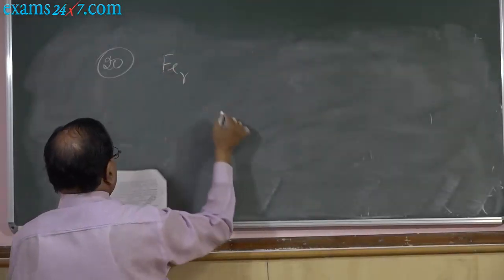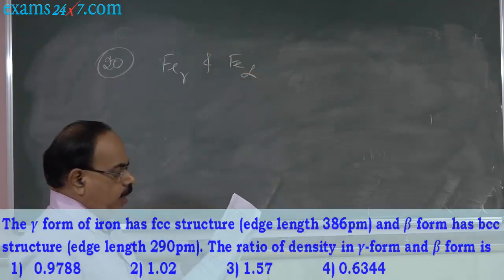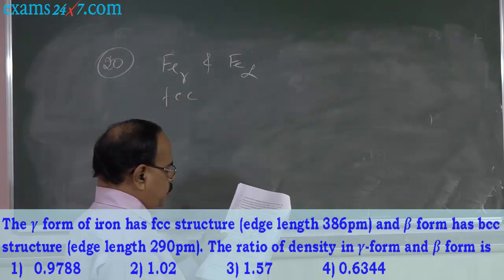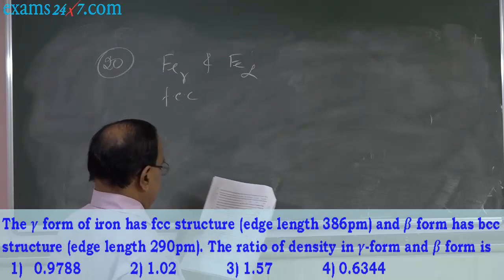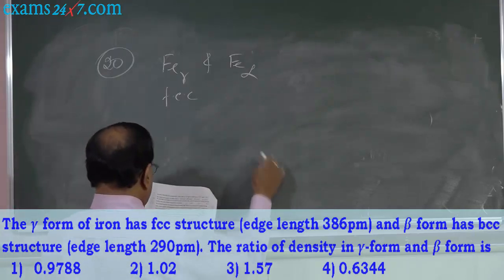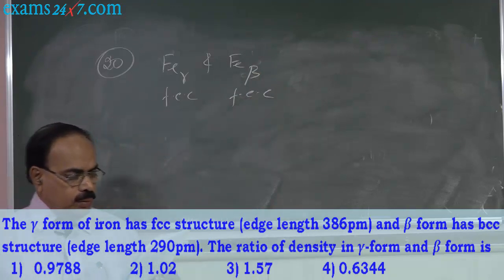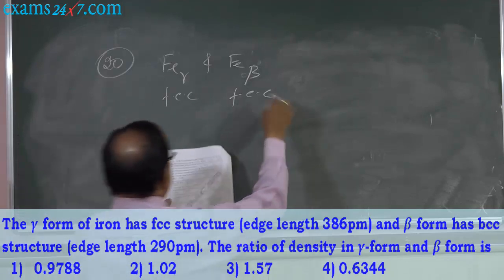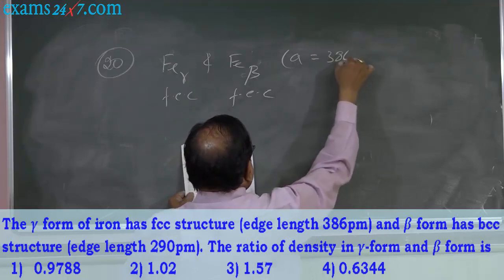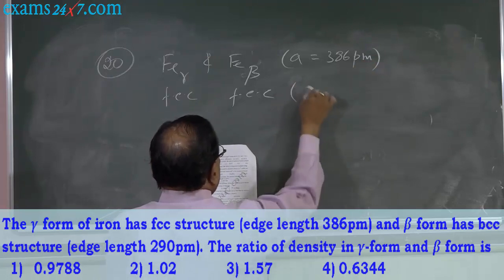We have Fe gamma and Fe alpha. The gamma form of iron has FCC structure. The beta form has BCC structure — not alpha; beta form has BCC structure. Edge lengths are given: in case of gamma iron, A is equal to 386 pm for the unit cell, and for beta iron, A is equal to 290 pm.